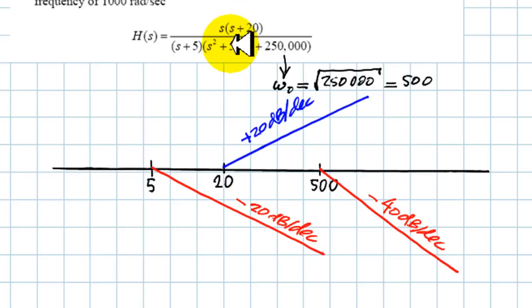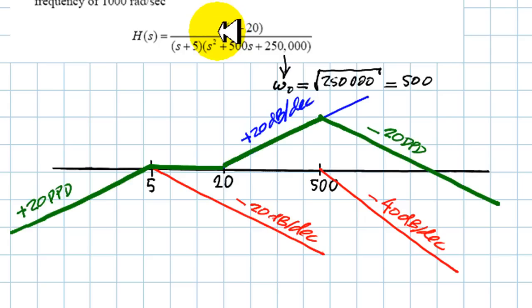I begin by identifying the knees on the decibels diagram. There's a pole at 5, and the slope for a pole. Then there is a simple zero at 20 and its contribution. And in this pair of complex conjugate poles, there is a knee frequency of 500 radians per second. The slope contribution is negative 40 decibels per decade. The entry on the amplitude diagram, because there is a zero at zero, is 20 decibels per decade.